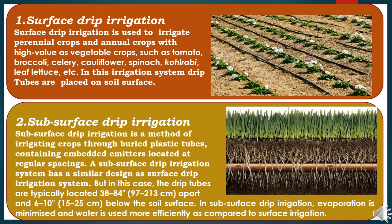The first drip irrigation method is surface drip irrigation. Surface drip irrigation is used to irrigate perennial crops and annual high-value crops such as vegetable crops including tomato, broccoli, celery, cauliflower, spinach, kohlrabi, leaf lettuce, etc. In this irrigation system, drip tubes are placed on the soil surface.